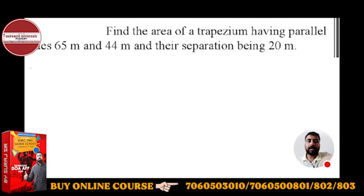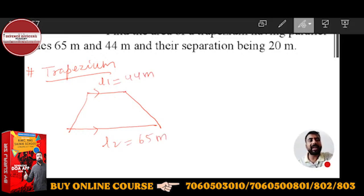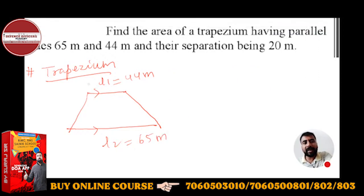Trapezium is a closed figure. It's a quadrilateral with only two sides parallel. Here suppose 44 meters, and L2 is 65 meters. The separation is the perpendicular distance between them.